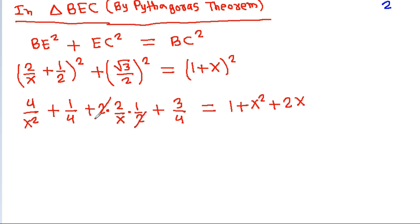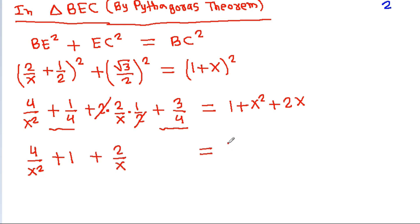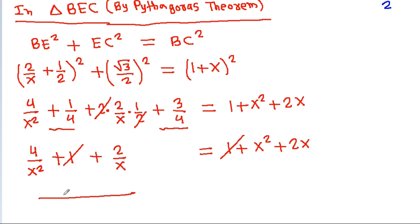The 1 cancels, giving 4/X² plus 2/X equals X² plus 2X. Rearranging: (4 + 2X) by X² equals X² plus 2X. Cross multiplying gives 4 + 2X equals X² times (X² + 2X).